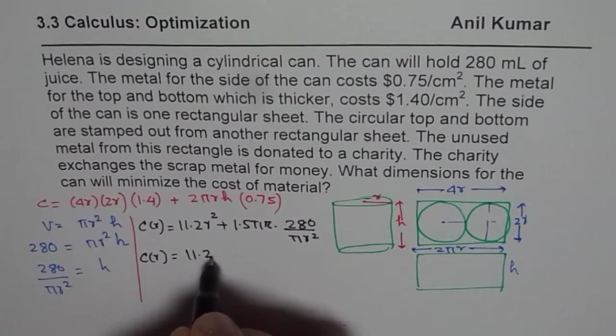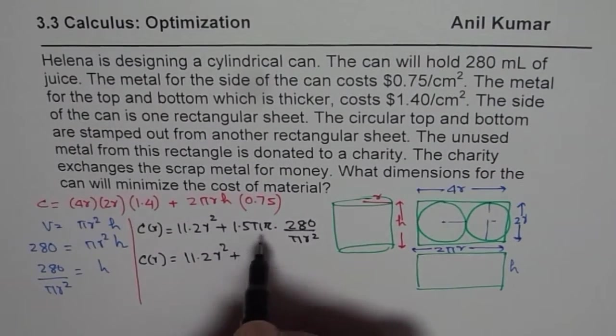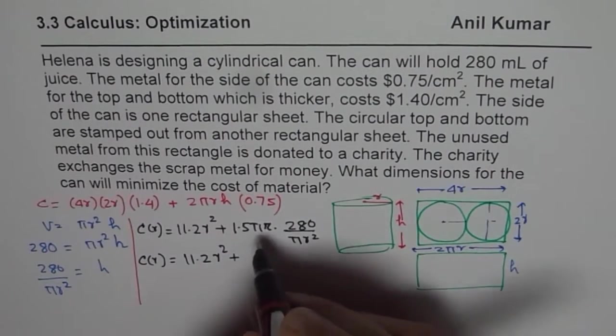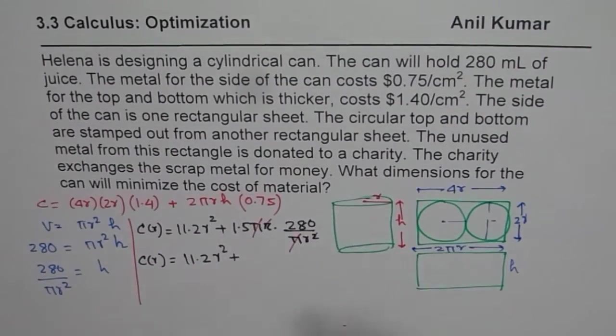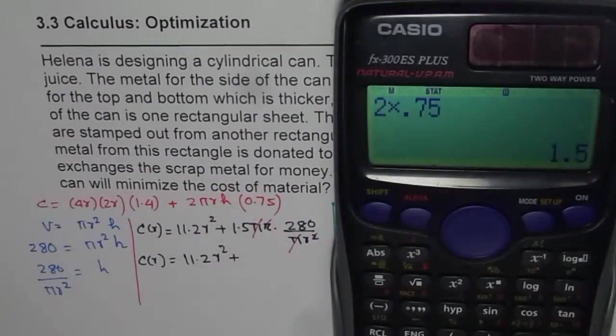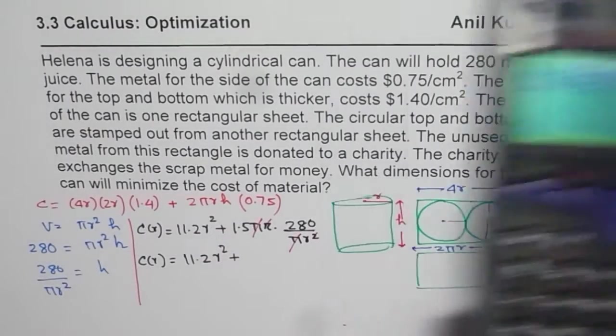You get the idea. So simplify this a bit, so which is 11.2 R square plus pi and pi cancel out. So this one of the R gets canceled out. So you get 1.5 times 280, 1.5 times 280, which is 420. So it is 420 divided by R.